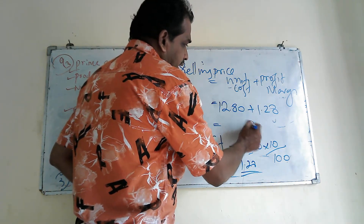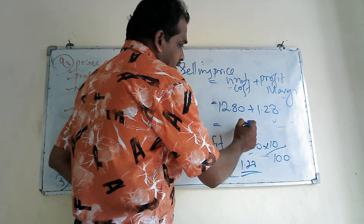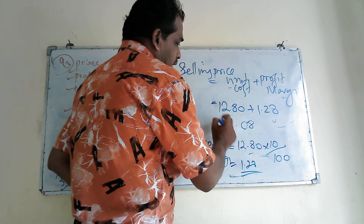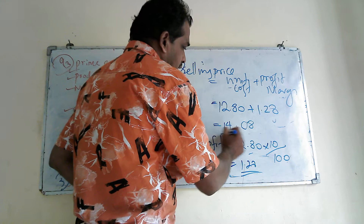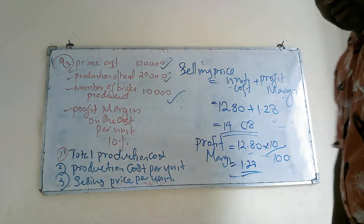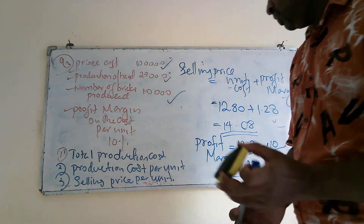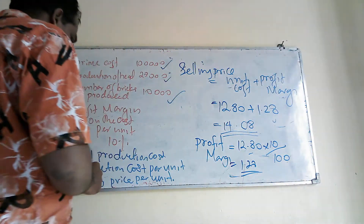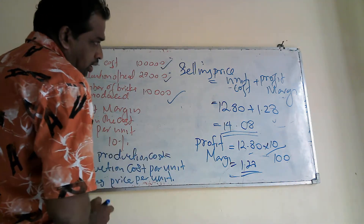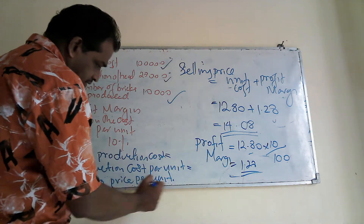Adding 12.8 and 1.28 gives us 14.08. That is the answer for Part C. So the total production cost, production cost per unit, and selling price per unit have all been calculated.